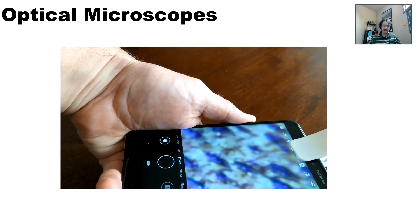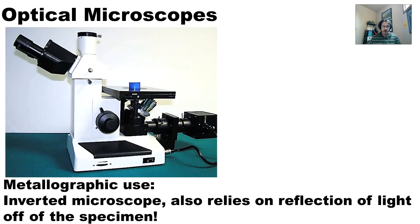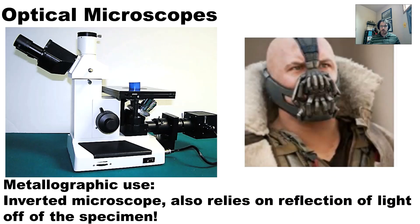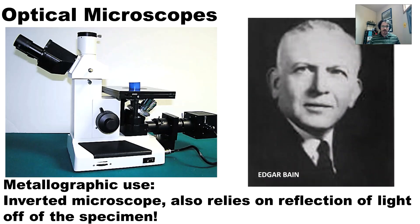As metallurgists, we use the so-called inverted microscope. Like the USB microscopes, it also relies on reflection of light off the specimen. This was invented by Edgar Bain - not the wrong Bain - for whom the phase bainite is named. He was a U.S. Steel employee very interested in the effect of processing and alloying on microstructure.